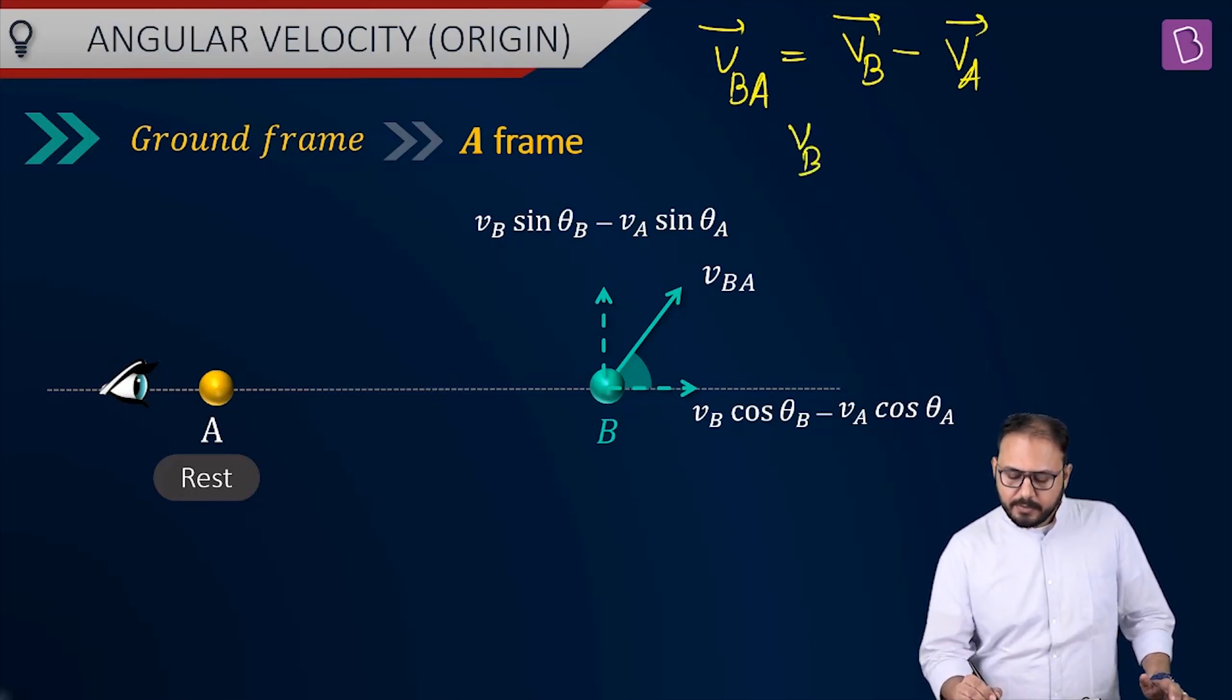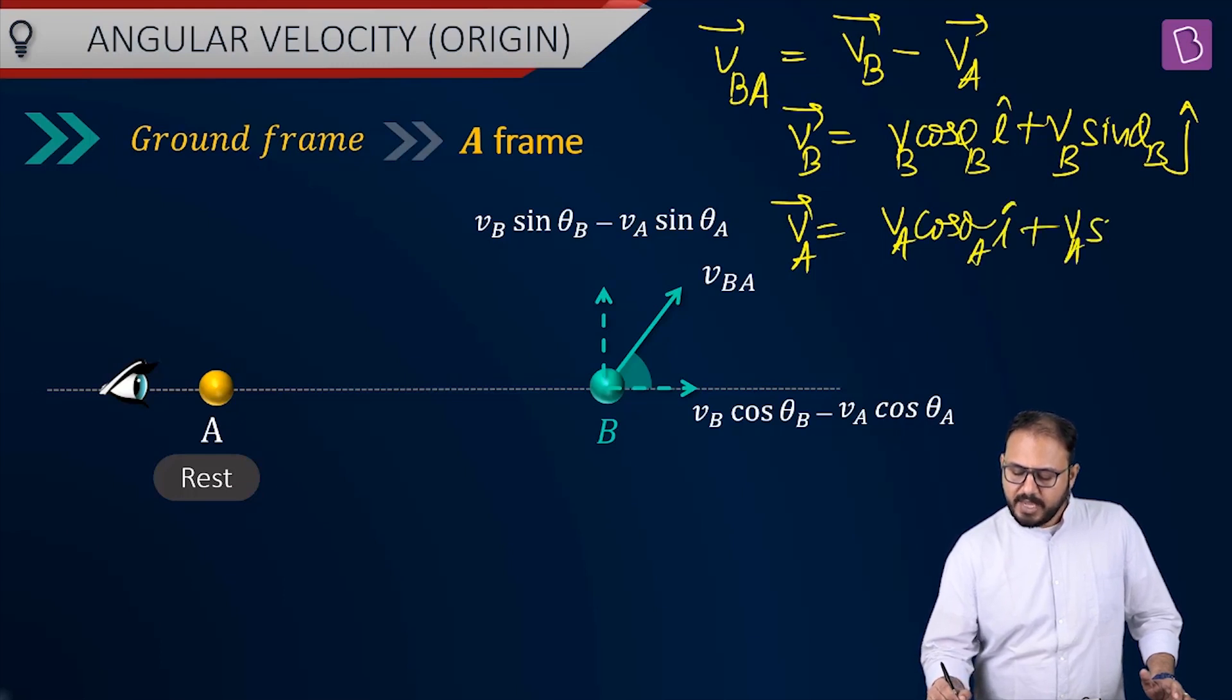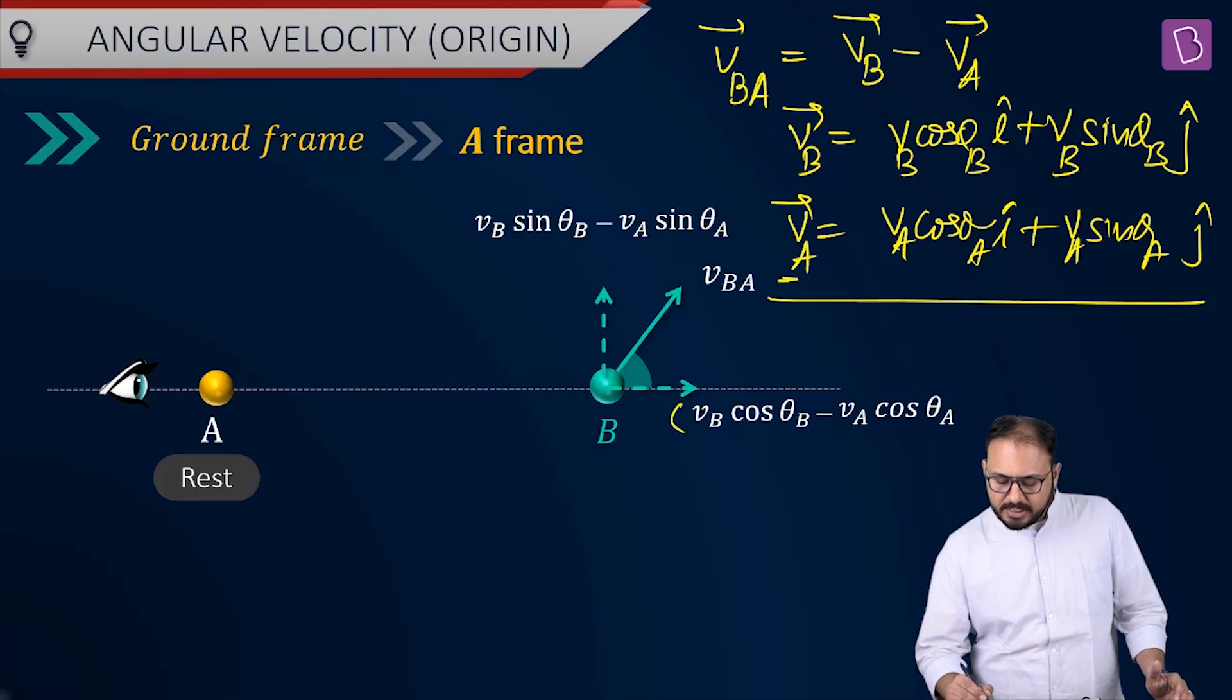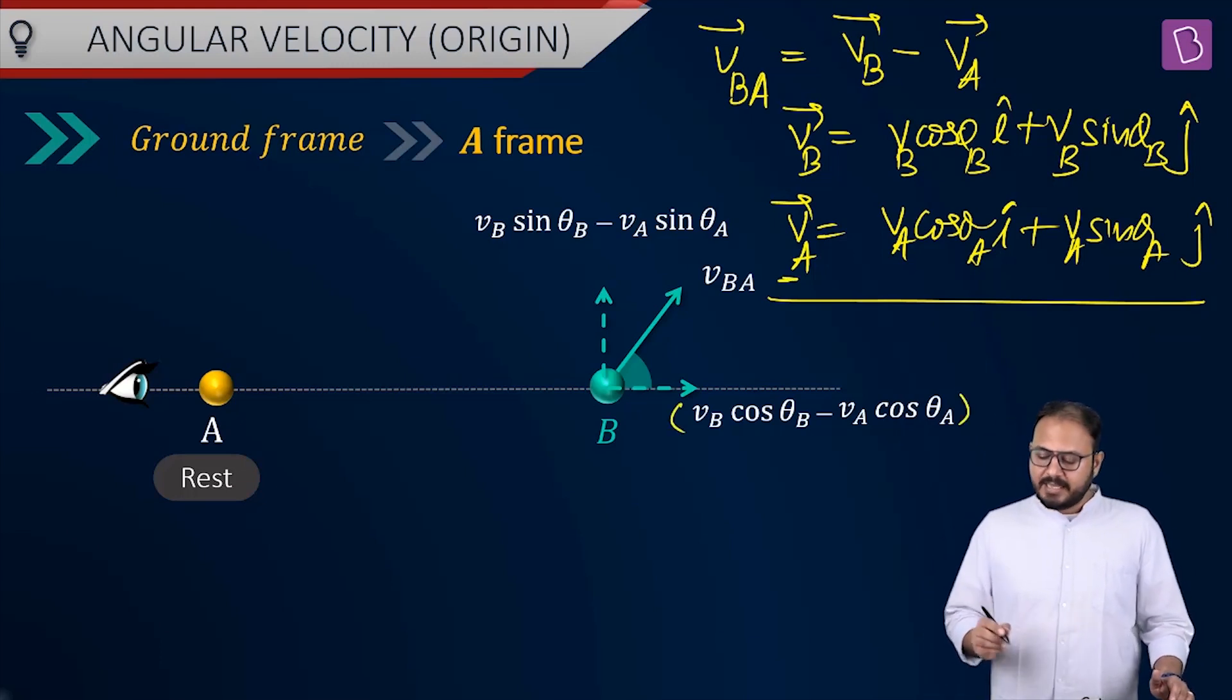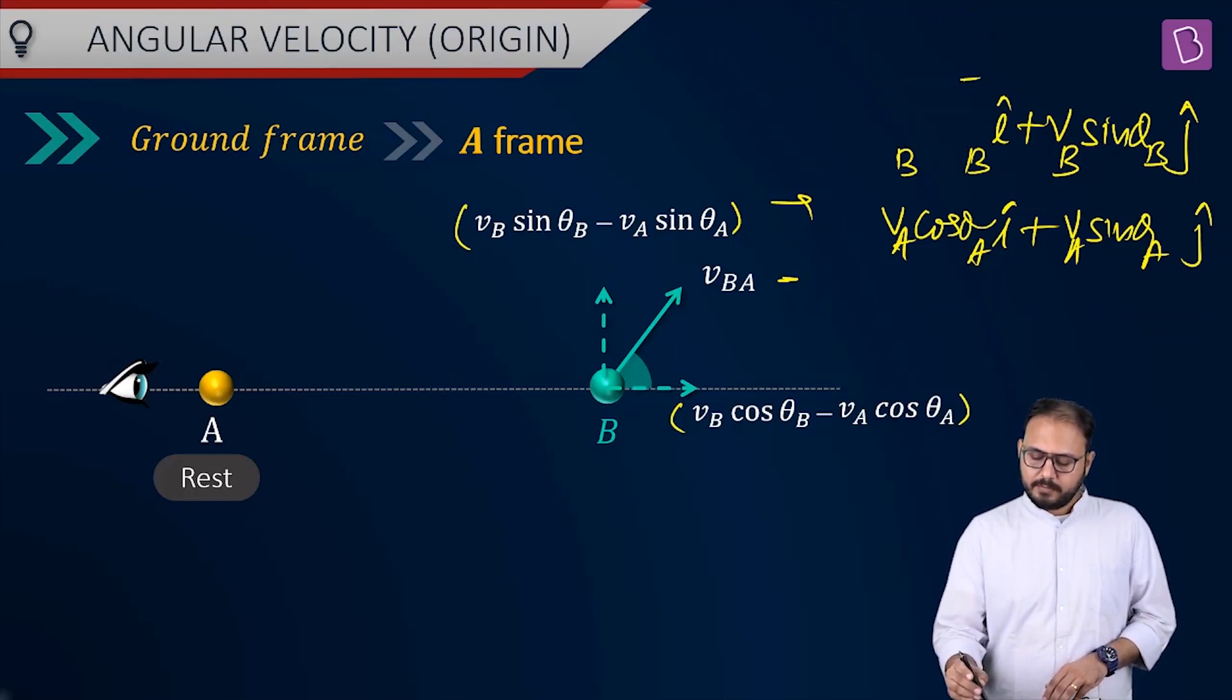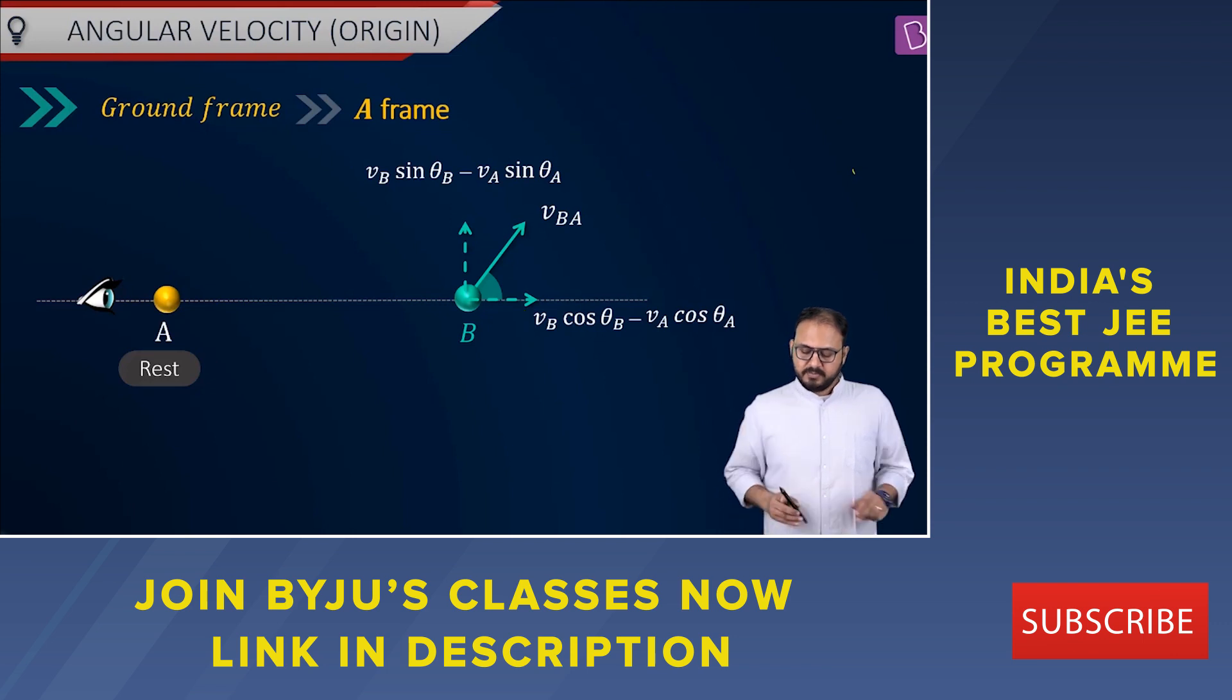What was vb equal to? vb was equal to vb cos theta b i-cap plus vb sin theta b j-cap. Va was va cos theta a i-cap plus va sin theta a j-cap. If you subtract it, the i-cap component would be vb cos theta b minus va cos theta a and the j-cap component would be vb sin theta b minus va sin theta a. Is this clear so far? You have done this before. We have seen this in relative motion.